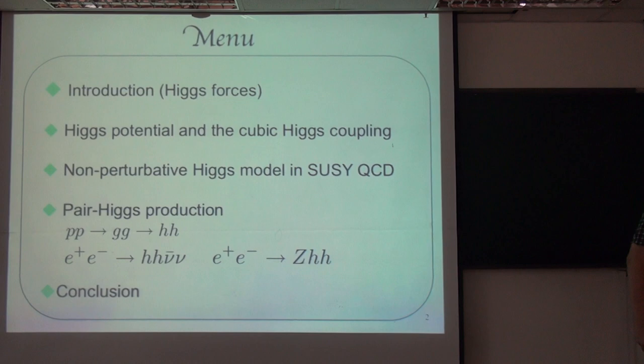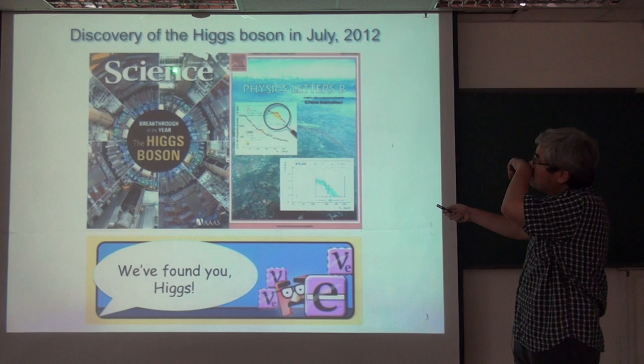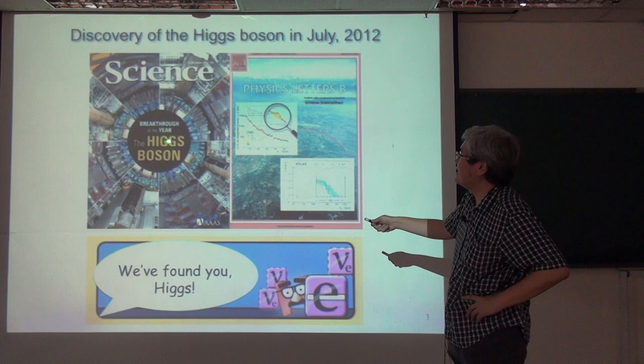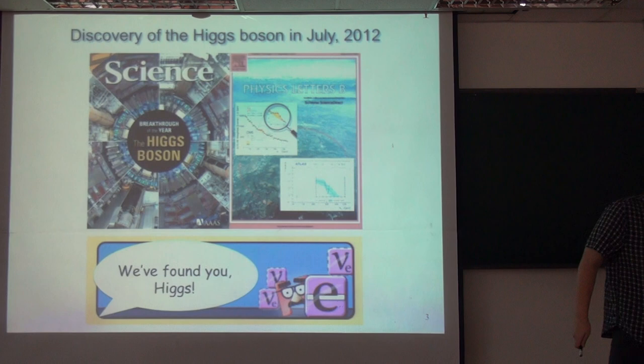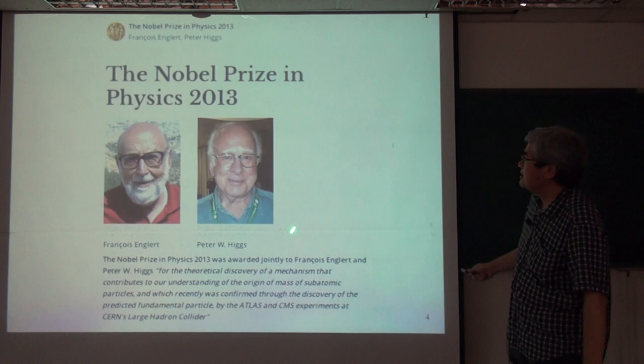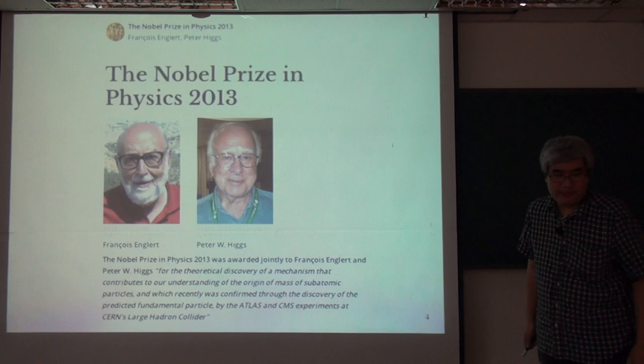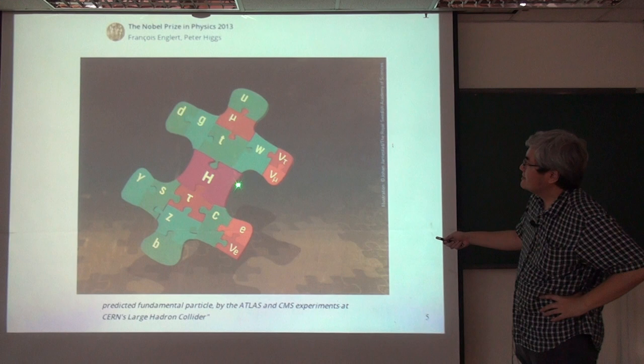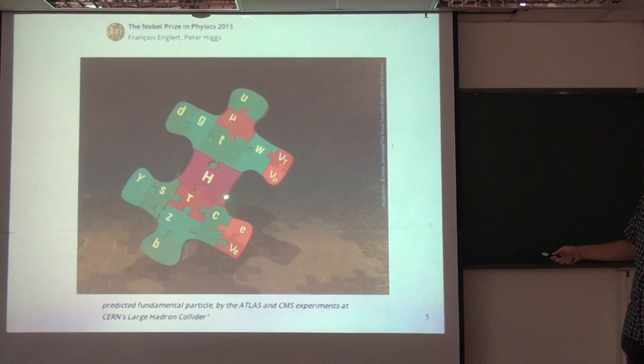Last year, in July, it was reported that the Higgs boson was discovered at the LHC. And it was actually the breakthrough of the year for 2012. As you know, this year's Nobel Prize in Physics was awarded — it is reported to Englert and Higgs. This is the illustration which was shown in the Nobel Prize talk, and actually the important one is the Higgs in the middle.